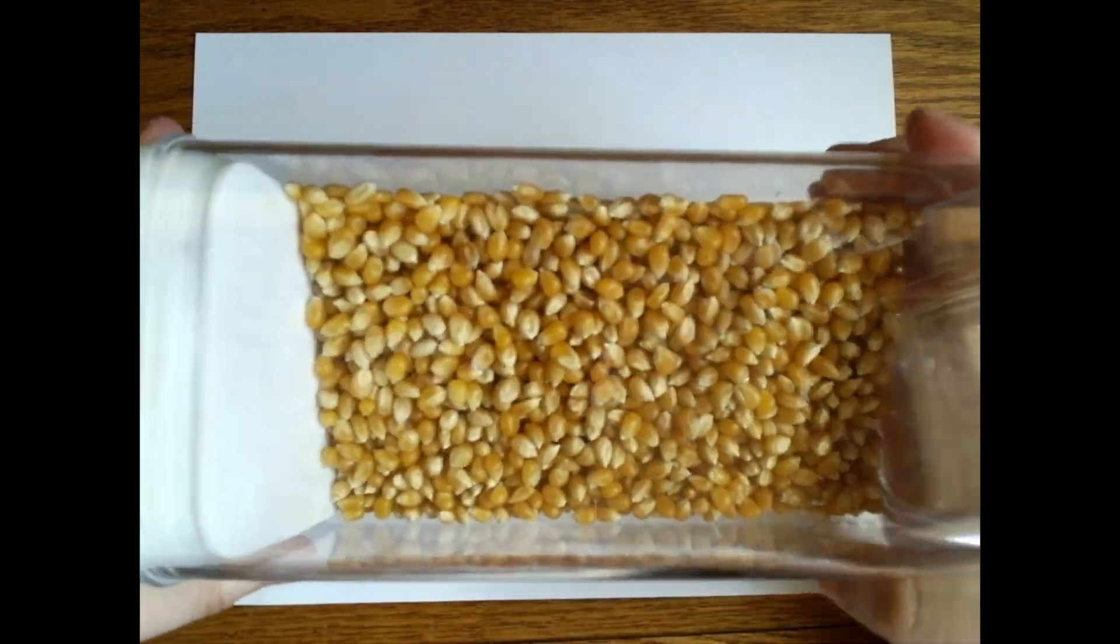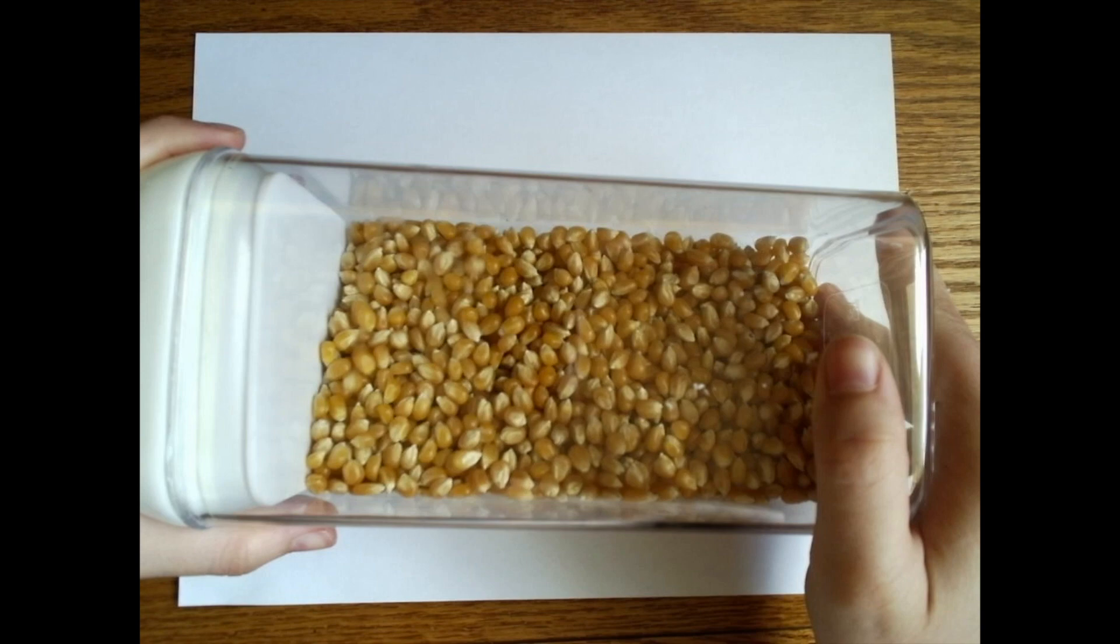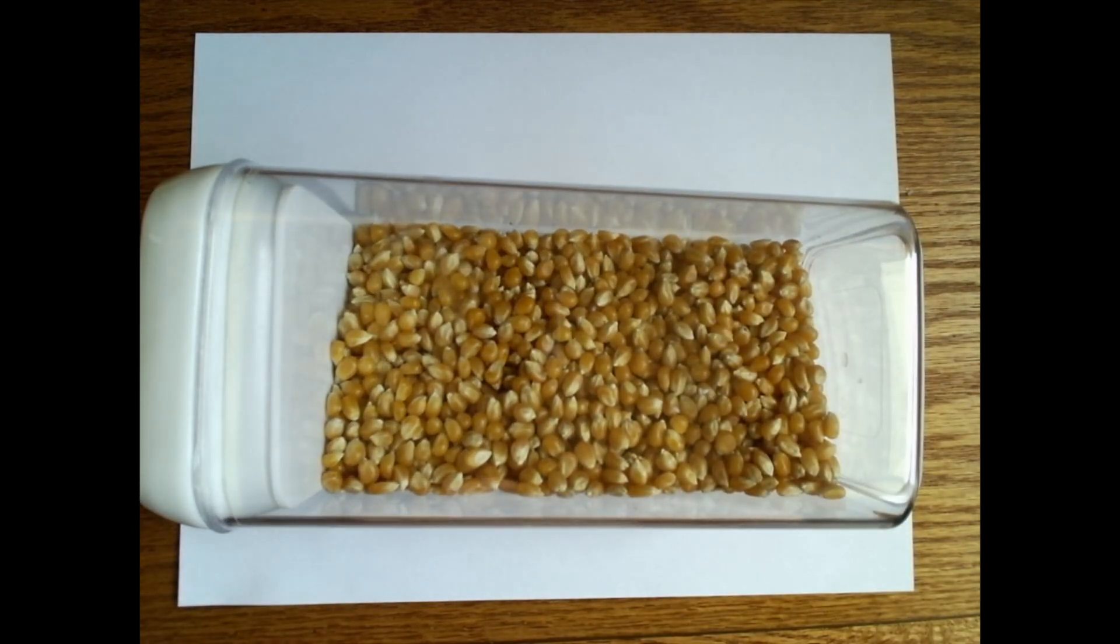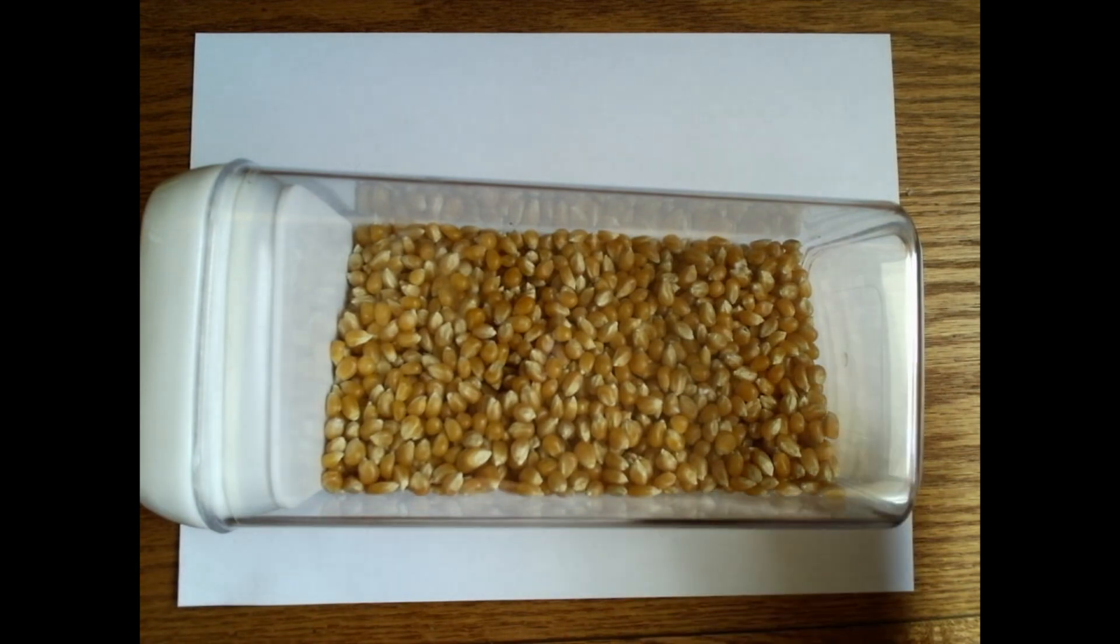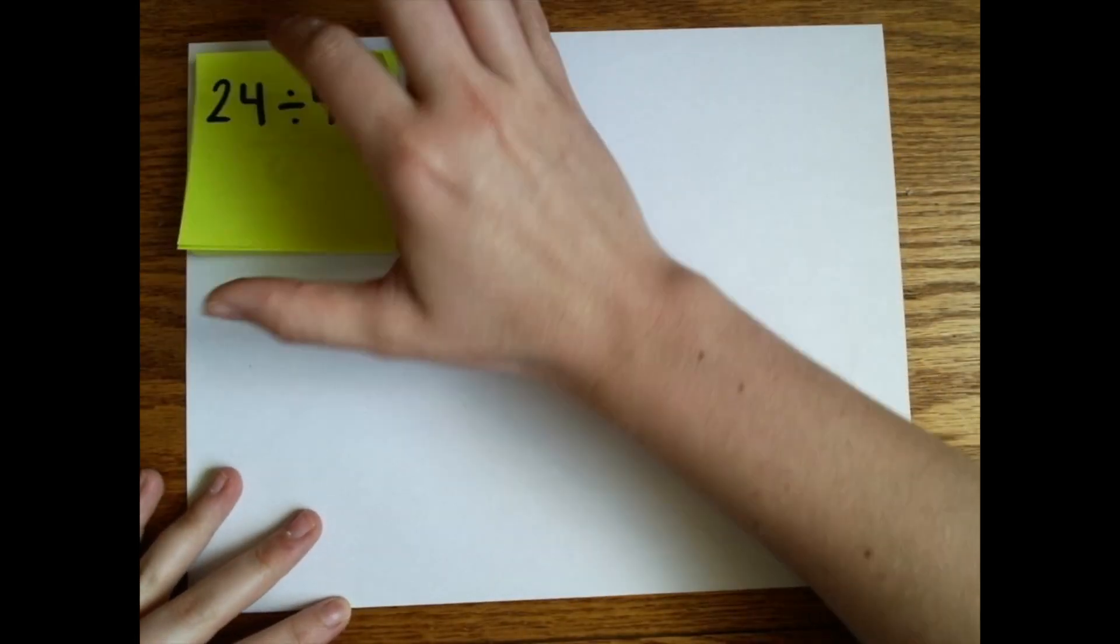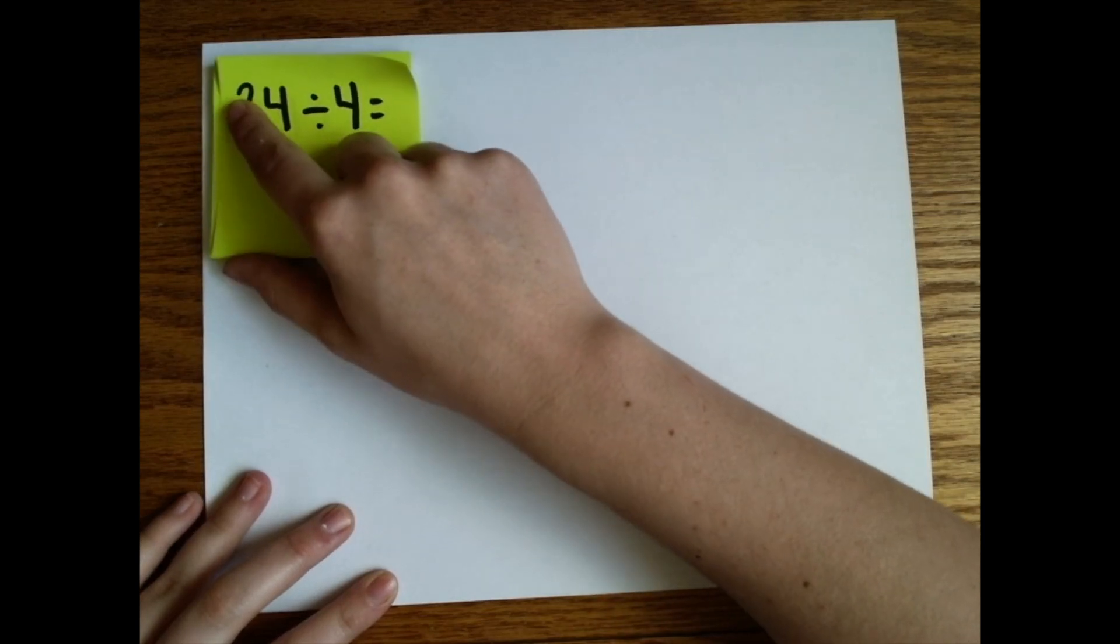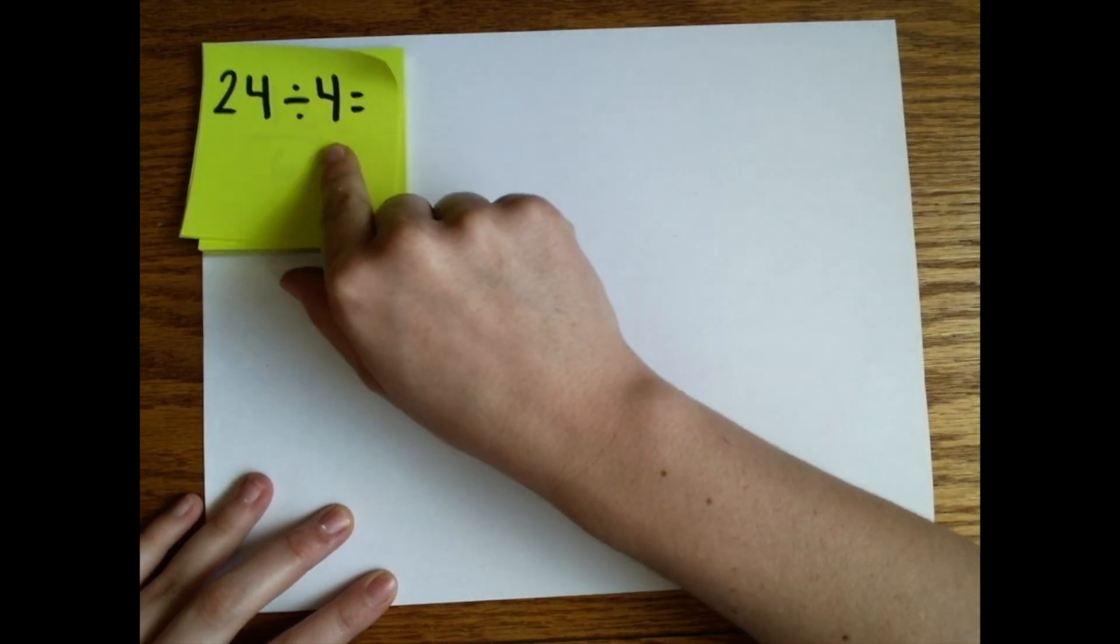One strategy that really helps you understand the action of division is to create the equation using manipulatives. Today, I'm going to be using popcorn seeds. Don't you just love that sound? You can use whatever you have at home, whether it's cereal, cards, dice, go outside and collect some rocks, whatever works best for you to practice this. Alternatively, I also will be showing you a way to do this on the computer with some online manipulatives, but let's start with the popcorn seeds. We know that division is the action of breaking a dividend into groups by the divisor. We'd be breaking this dividend, 24, into four equal groups.